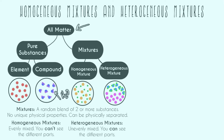Homogeneous means evenly mixed, which means you can't see the different parts. Looking at our green and orange example on the chart, for the most part you're not going to say the oranges are in one location and the greens are in another — it's mixed around. That means homogeneous.